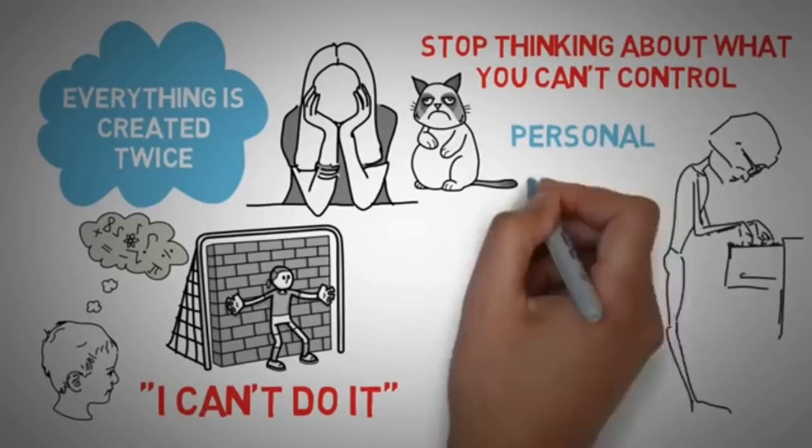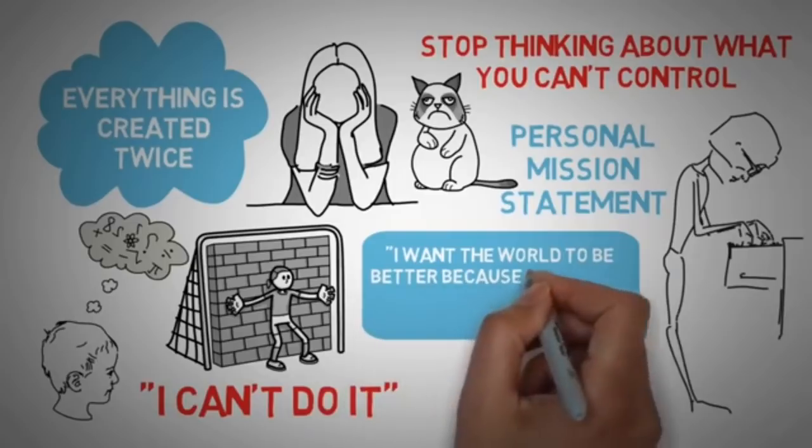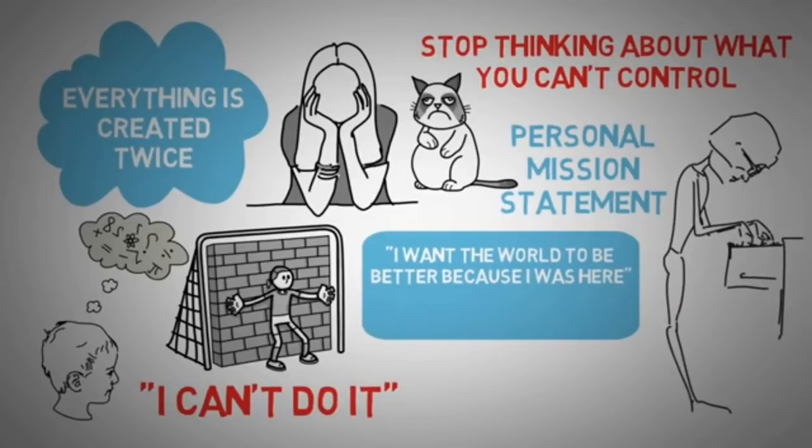The last thing Stephen Covey mentions in this chapter is something called a personal mission statement. This is a one-line sentence that you can rely on to give you a sense of purpose in the world. A very simple mission statement is, I want the world to be better because I was here. In fact, that's Will Smith's personal mission statement.